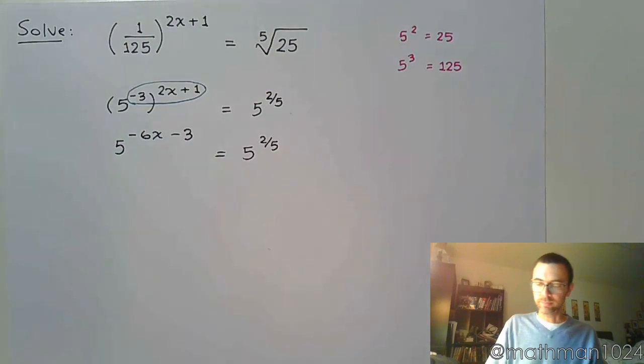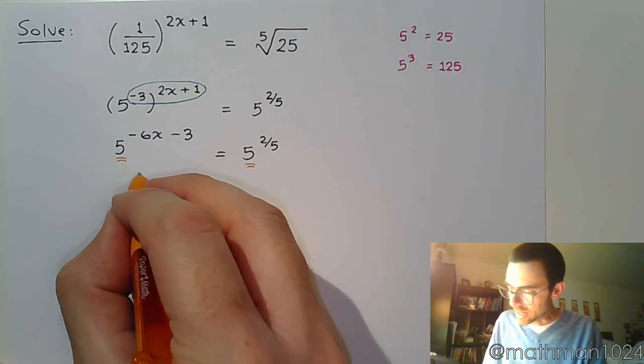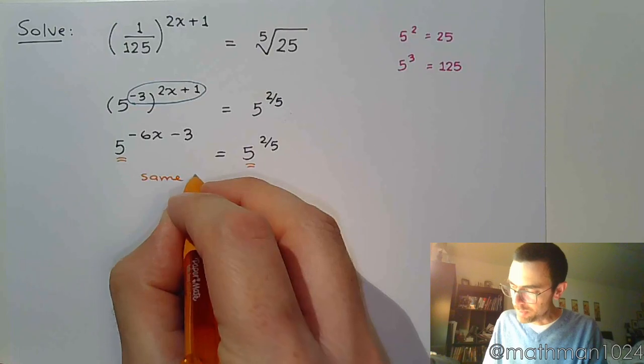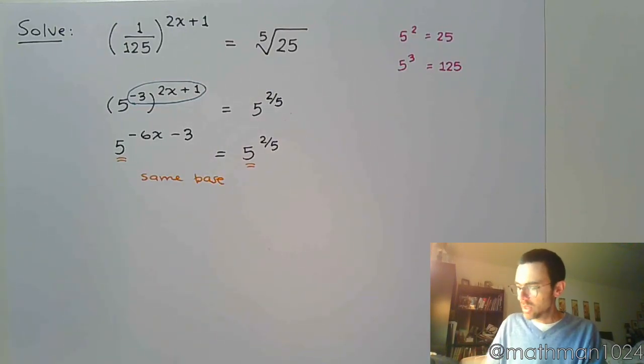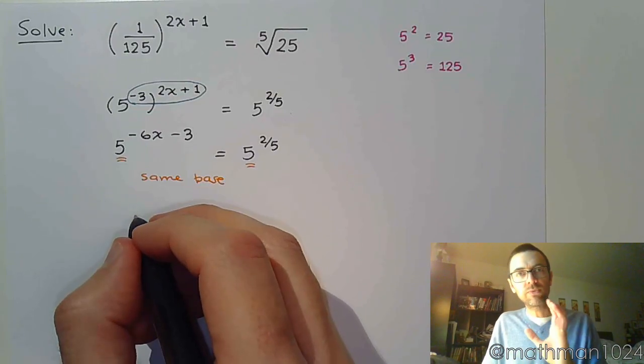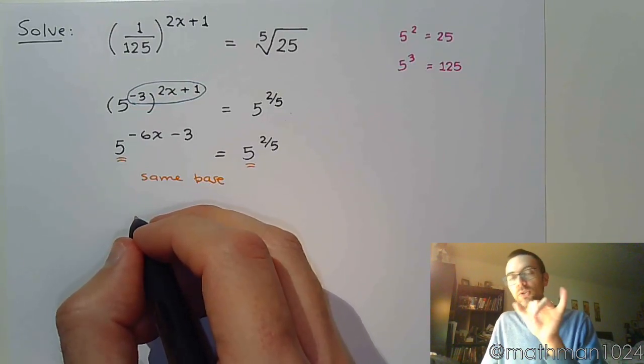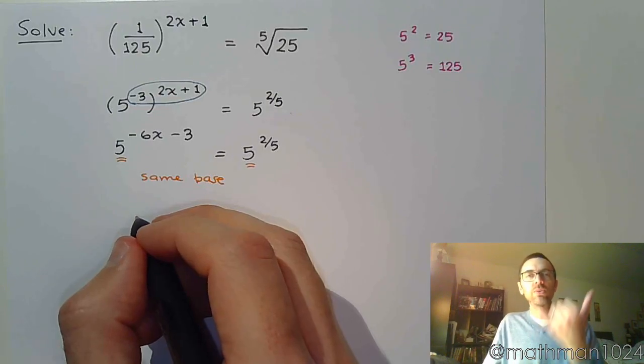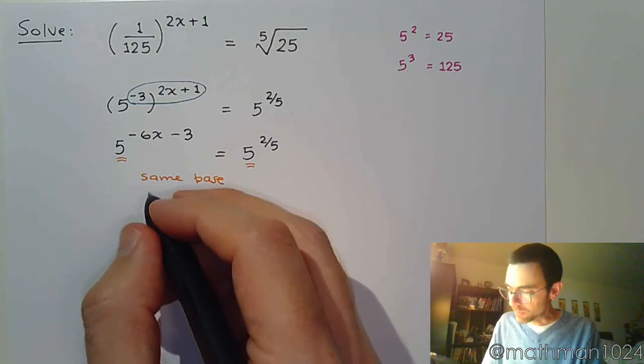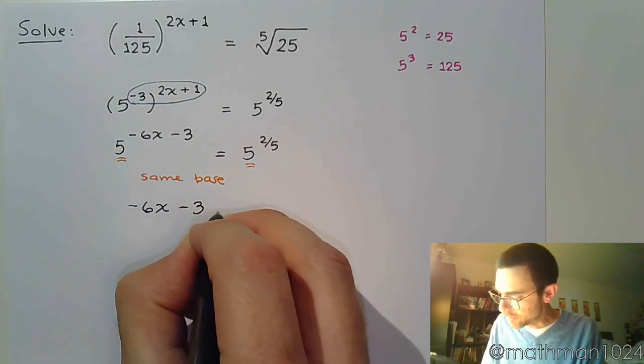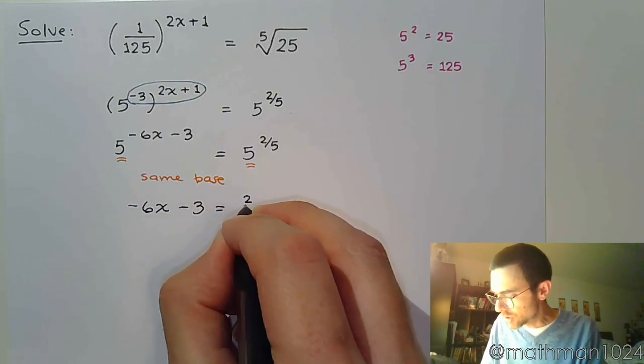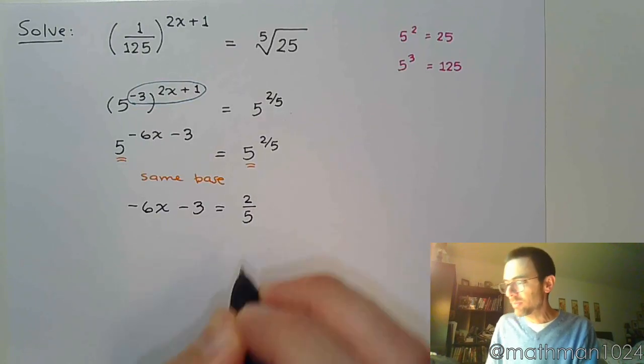All right, these guys have the same base now, which is what we were trying to get. So our equation is going to come straight from those exponents. As long as you have the same base on both sides, then your equation will be those powers. So negative 6x minus 3 is equal to 2 over 5.